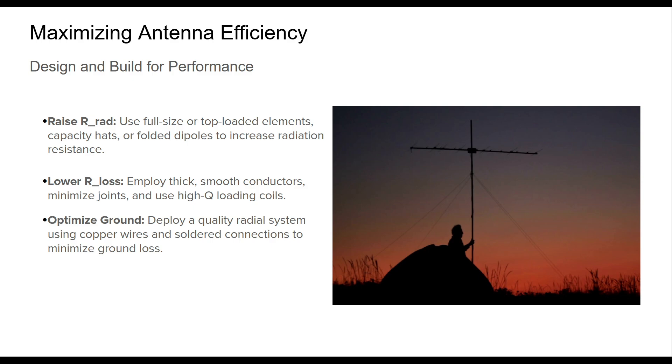Boosting antenna efficiency involves two complementary strategies: maximizing radiation resistance (R_rad) and minimizing loss resistance (R_loss). By increasing R_rad, more of the power is radiated as a useful signal. This can be achieved with full-size antennas, or electrically short ones enhanced with top-loading or capacity hats. Reducing losses means addressing both conductor resistance and ground losses. Thick, smooth copper conductors offer lower resistance, and keeping coil Q values high ensures minimum power is wasted in matching. Every joint, every connection, matters. Lastly, the ground system cannot be overlooked. High-conductivity radials soldered into place dramatically improve the return current path. These practical improvements often lead to efficiency increases from below 50% to over 90% in real-world setups.